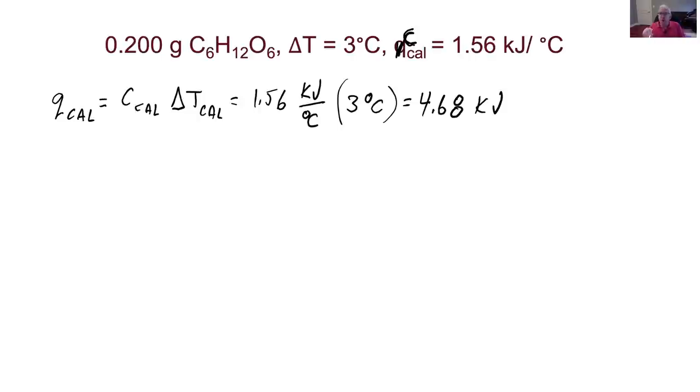So this is Q for the calorimeter. That's how much energy flows into my steel container and the bucket of water it's sitting in and all that stuff. So that same amount of energy had to flow out from the reaction. So I could write that Q for the calorimeter has got to be equal to minus Q for the glucose or for the reaction, and the glucose is kind of gone now. So calling it Q for the glucose is probably a bad idea, but I should put maybe a reaction there. So this tells me that Q, this time I'm going to change this to say Q for my reaction, because I like that better. Sorry for changing terms right in the middle of the problem. Must be equal to minus 4.68 kilojoules.